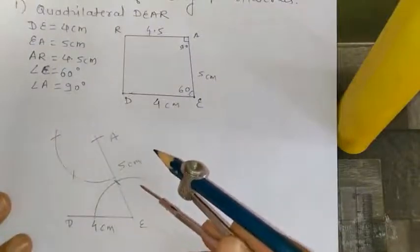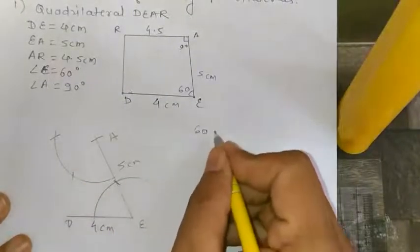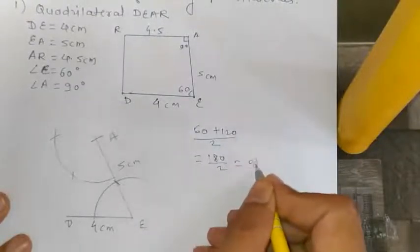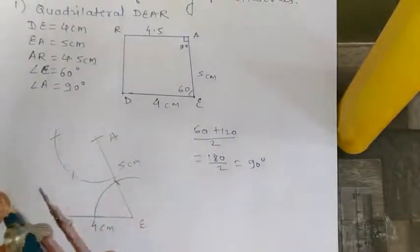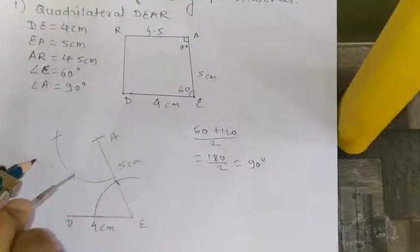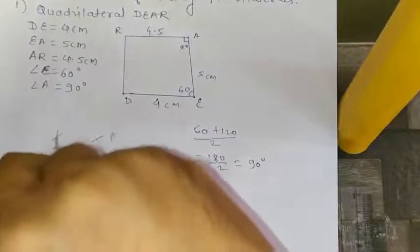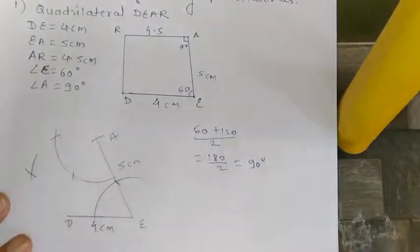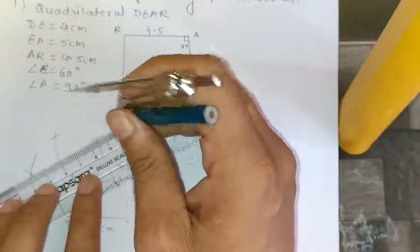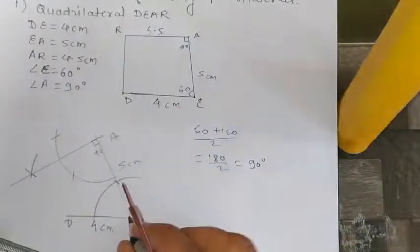The first cut gives 60° and the second gives 120°. Since we want 90°, which is the average of 60 and 120 — (60 + 120) ÷ 2 = 90 — take the same compass distance, place the pointer at each arc intersection and draw crossing arcs. Then make a straight line from point A through that intersection. This angle is exactly 90°.